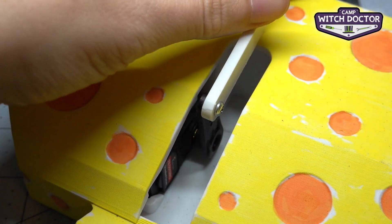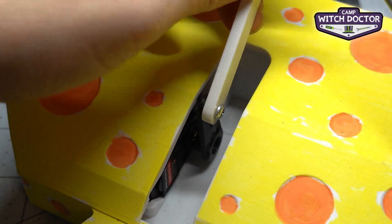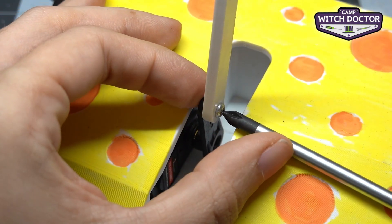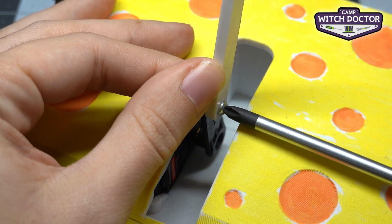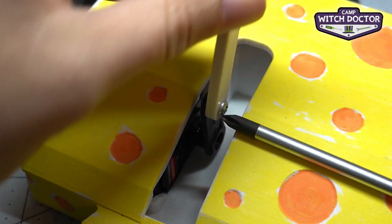Now you don't want to install this screw super tight because you want this to be able to turn slightly. So that's a little bit tight, so I'm going to loosen it by a little bit of a turn. And now this turns freely.